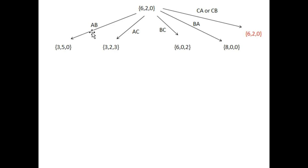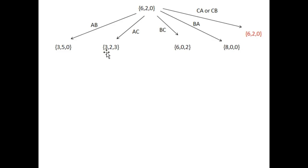I have added the actions over here on the edges. If we apply the action AB, the new state will be 3,5,0. Look at these values — Y is 3 at one location and 5 at another location. If we apply action AC, then the new state will be 3,2,3. At the first location, jug A has the value 3.